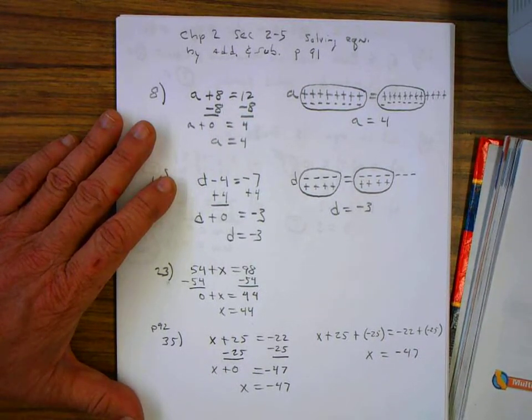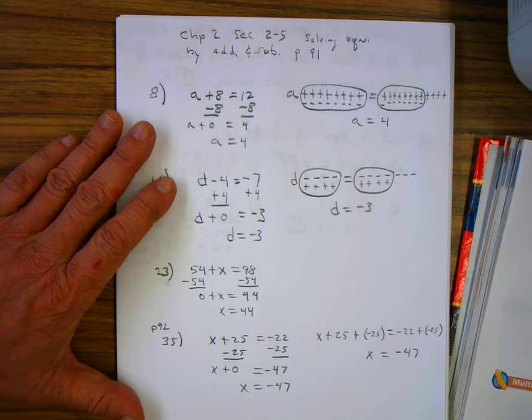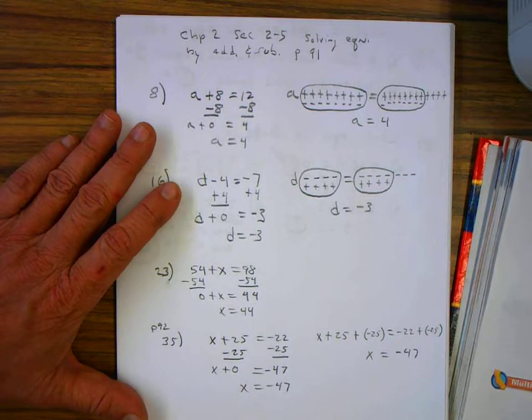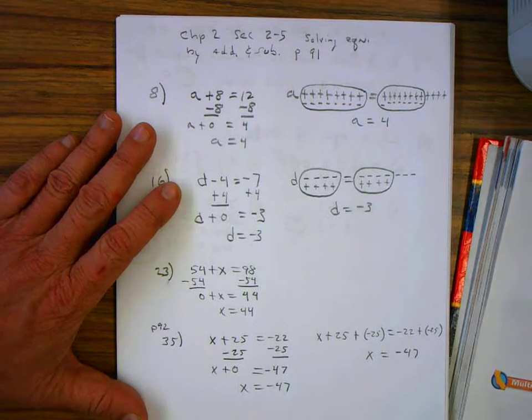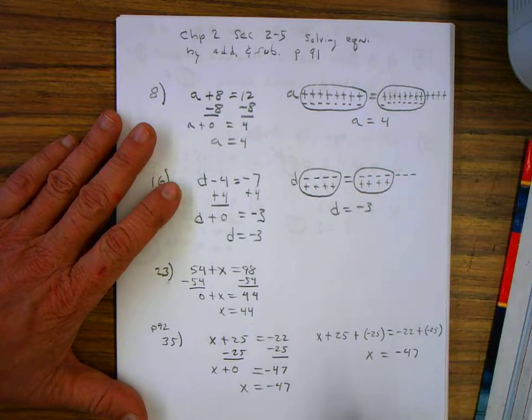Again, the problem says to solve x plus 25 equals minus 22, one student subtracted 25 from each side, another student added negative 25 to each side. Will both methods work? Explain. Here's the explanation, and they both work.